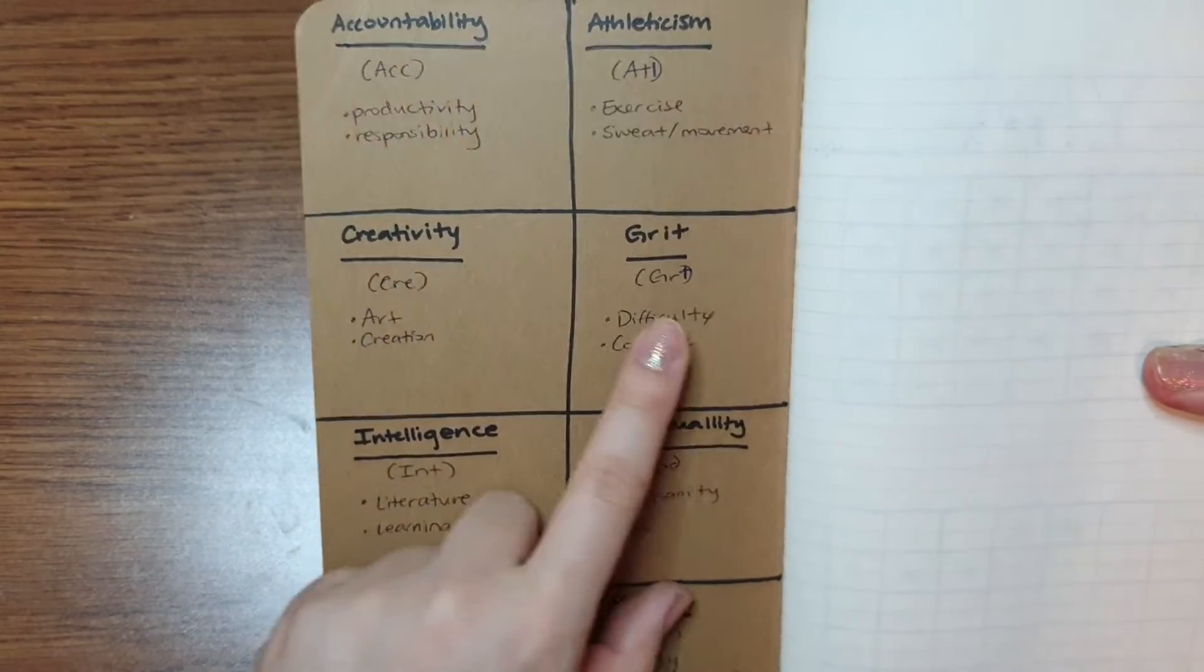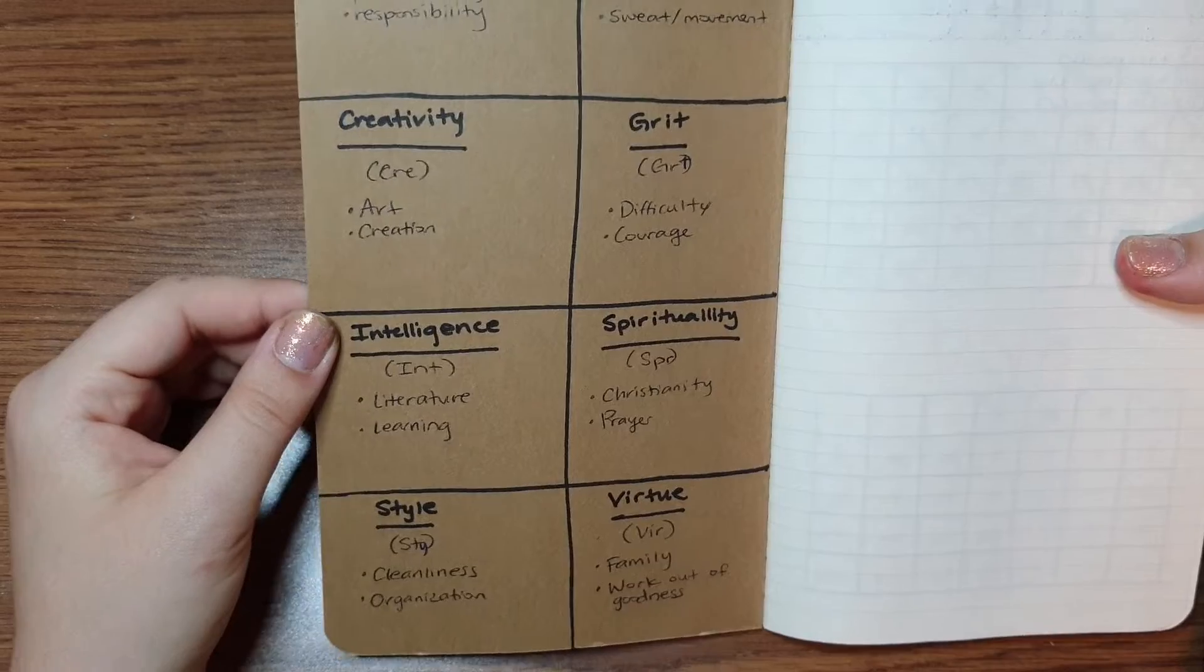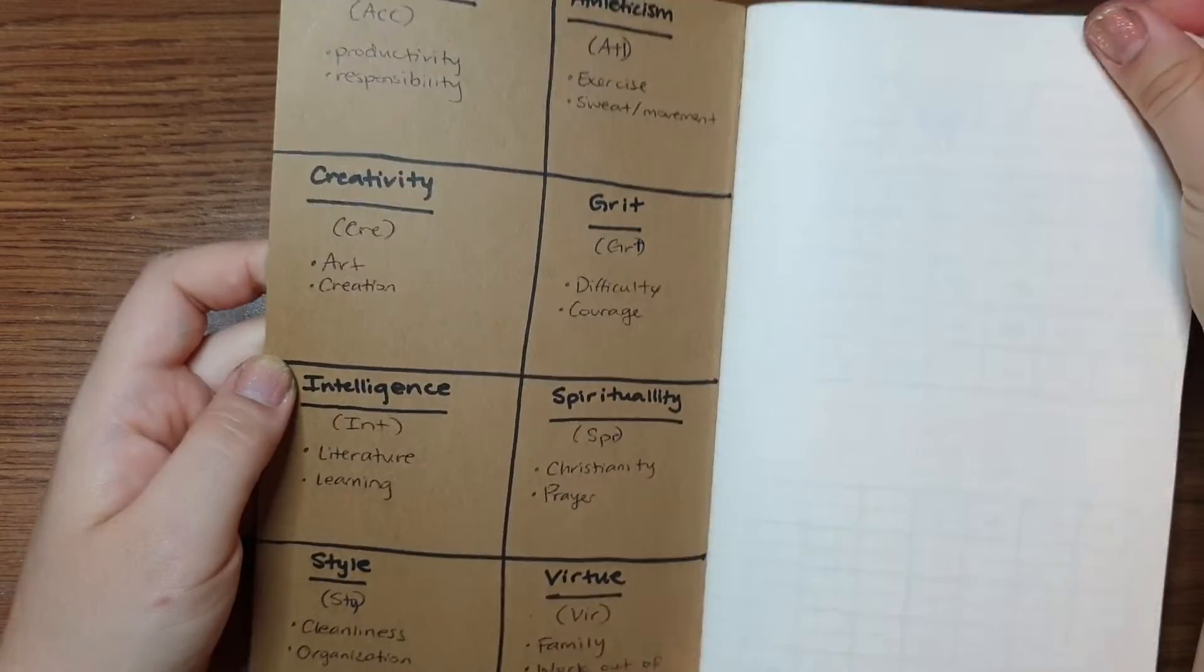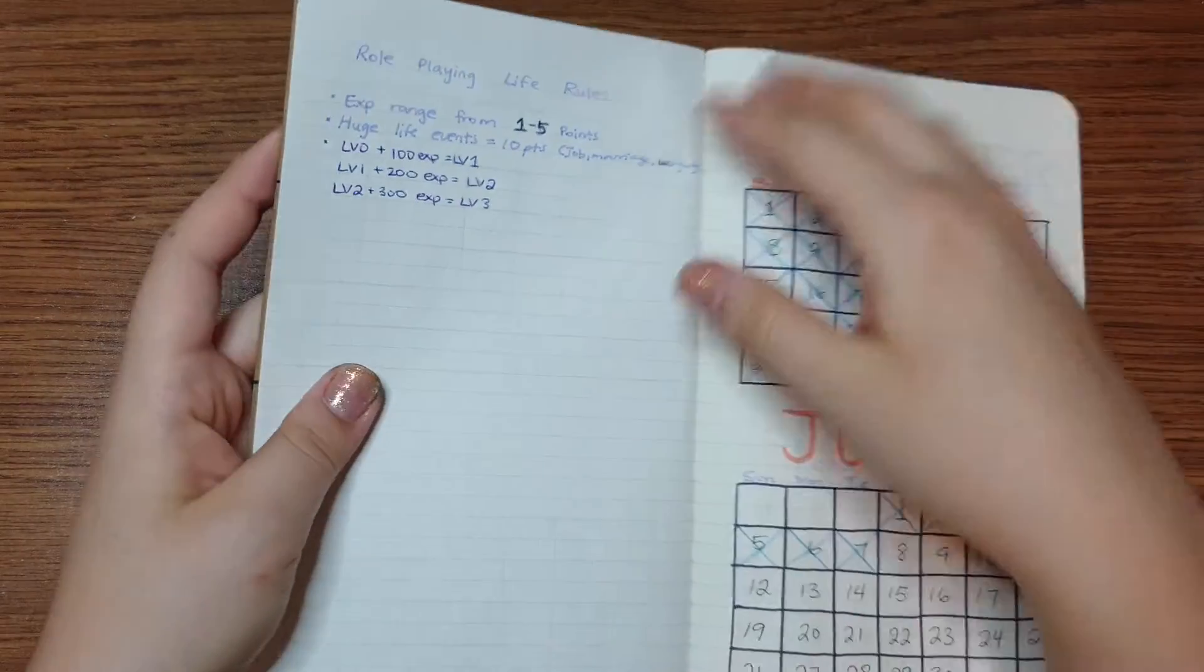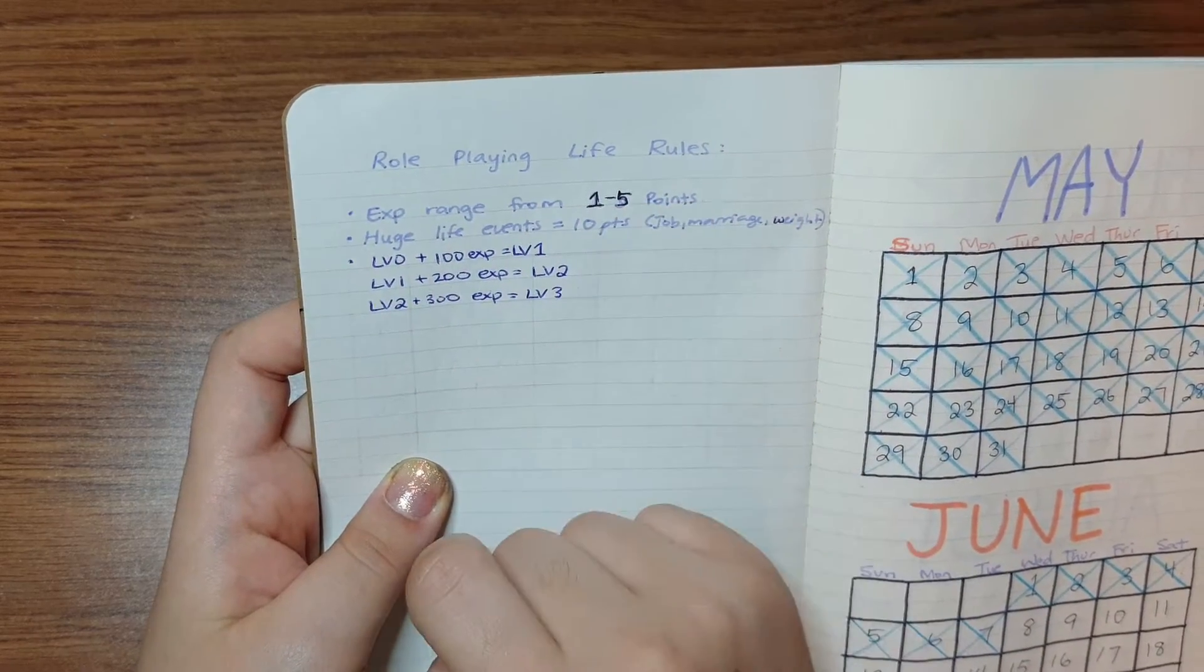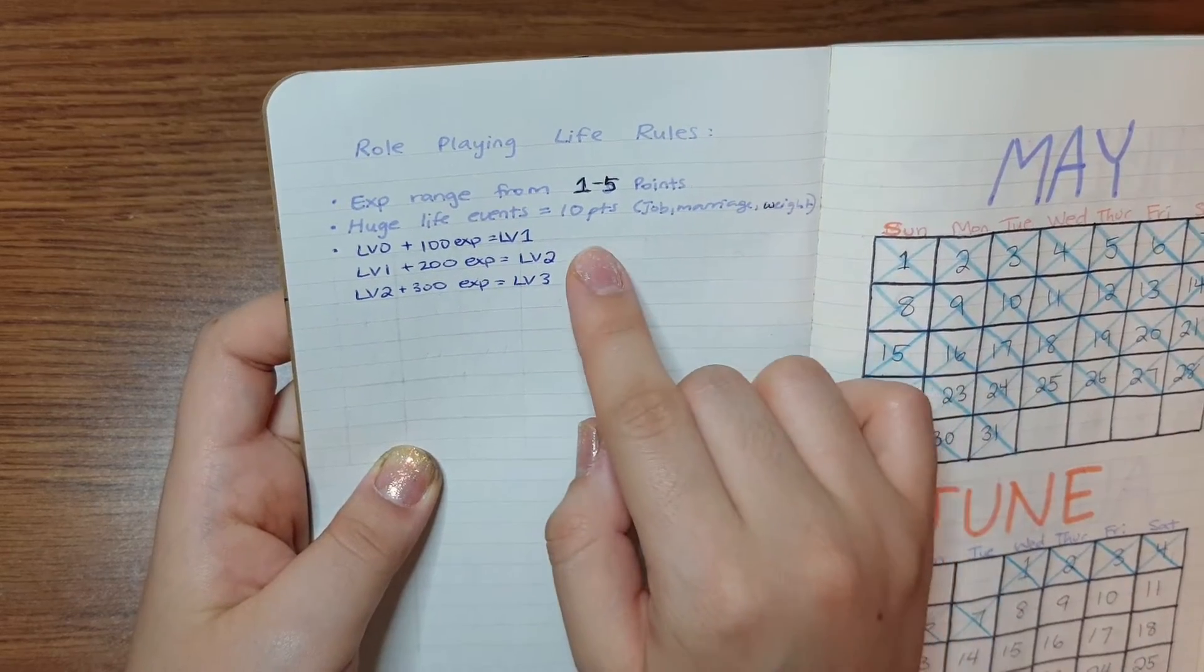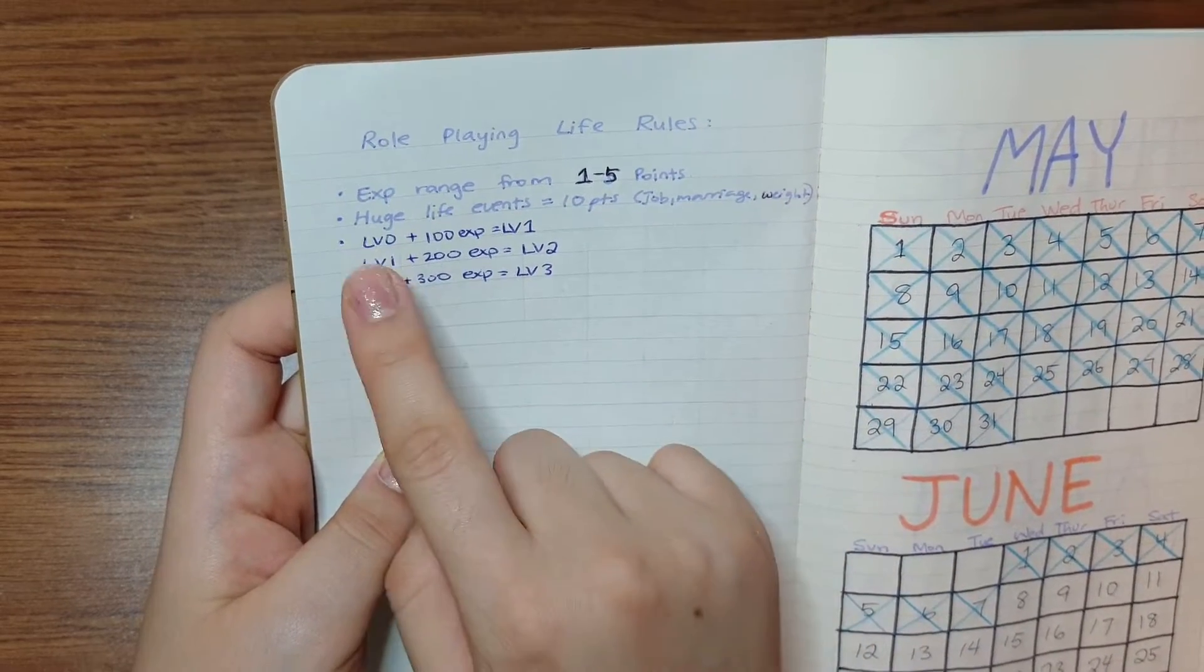Grit, intelligence, spirituality, style, and virtue. I made rules that are like role-playing life rules. EXP ranks from one to five points. Huge life events like job, marriage, weight goals, you know, it's ten points each.